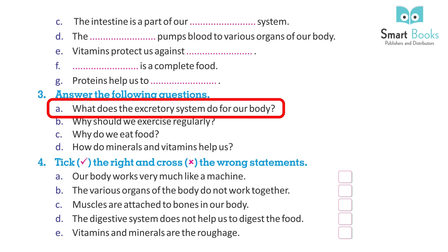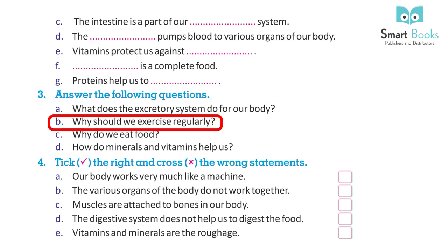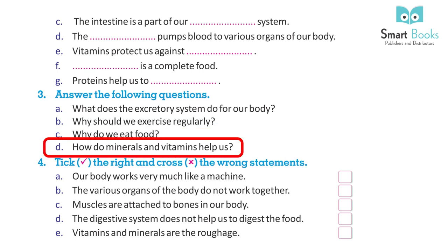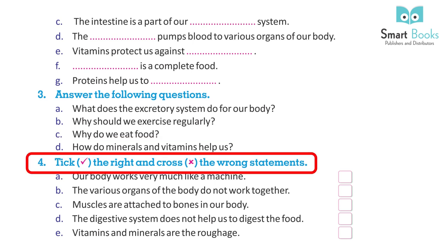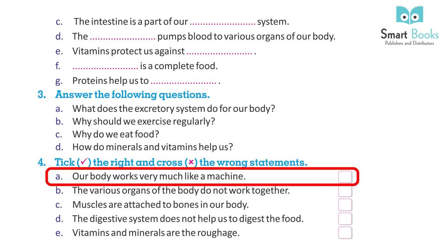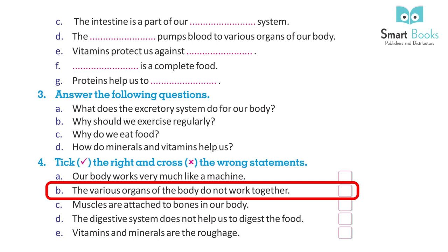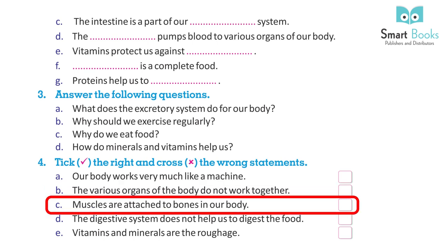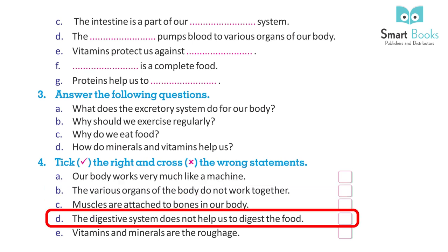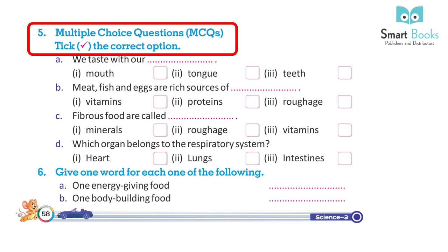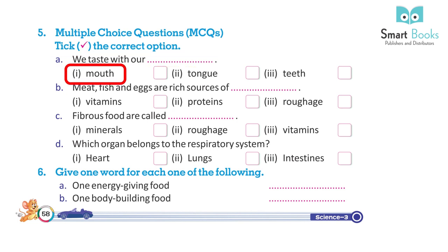Answer the following: a) What does the excretory system do for our body? b) Why should we exercise regularly? c) Why do we eat food? d) How do minerals and vitamins help us? Tick the right and cross the wrong statements: a) Our body works very much like a machine. b) The various organs of the body do not work together. c) Muscles are attached to bones. d) The digestive system does not help us to digest food. e) Vitamins and minerals are roughage.